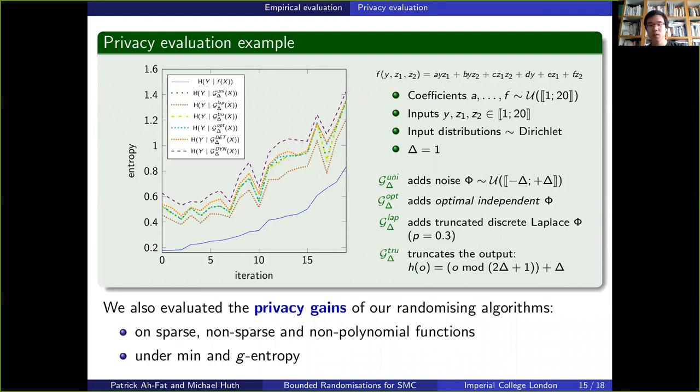We also compared the privacy gains offered by other randomizations, which comply with the maximal distortion bound delta. G-Uni adds noise uniformly distributed over minus delta and plus delta. G-Opt adds a noise phi, which is optimally distributed and which is the result of our previous work, as mentioned before. G-LAP is the equivalent of the Laplace mechanism in its discrete and truncated version. And finally, D-Trunc simply truncates the output.